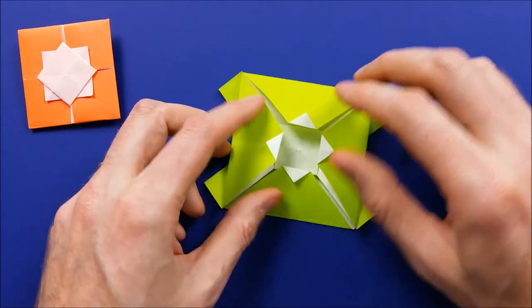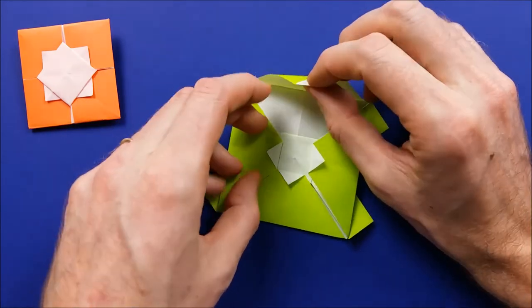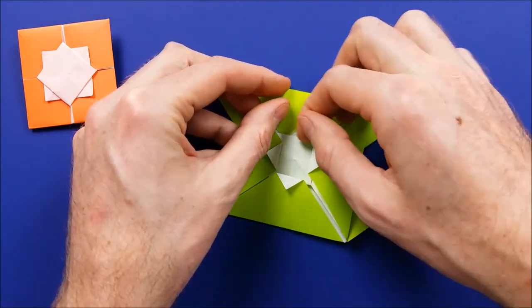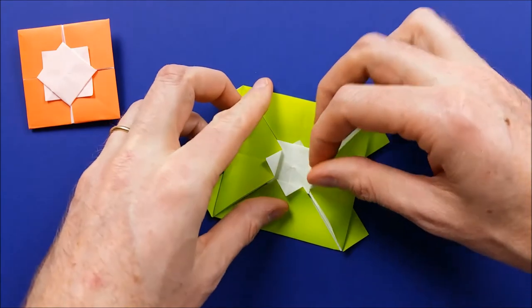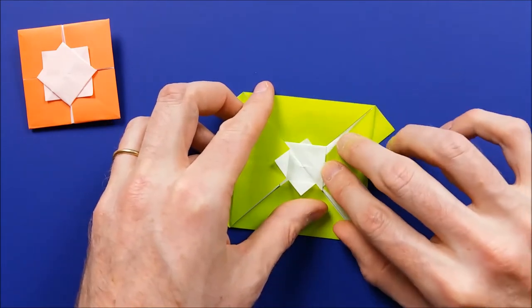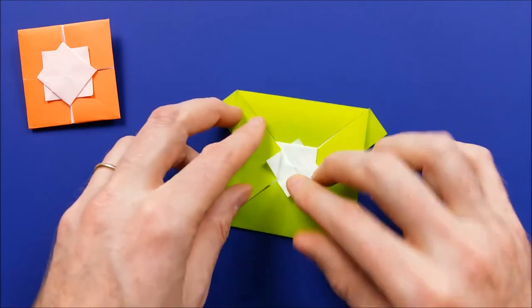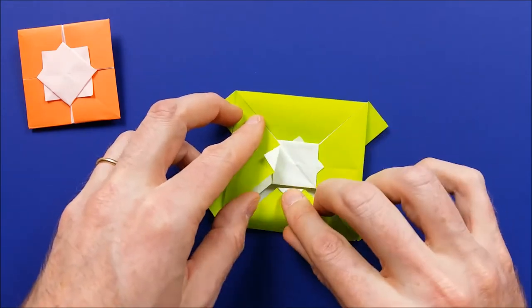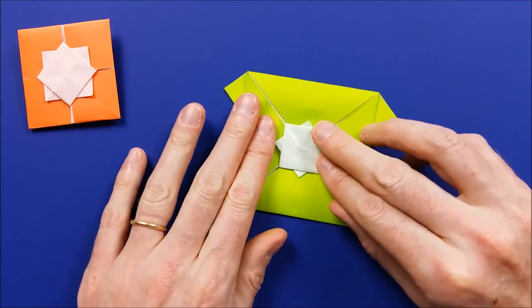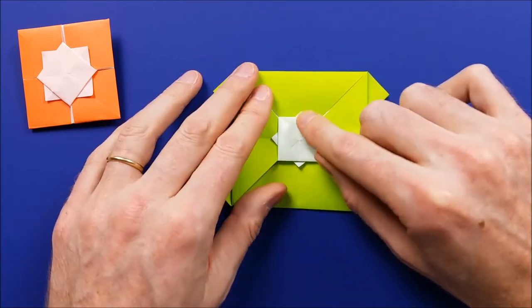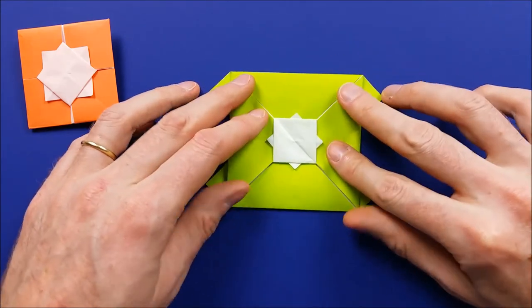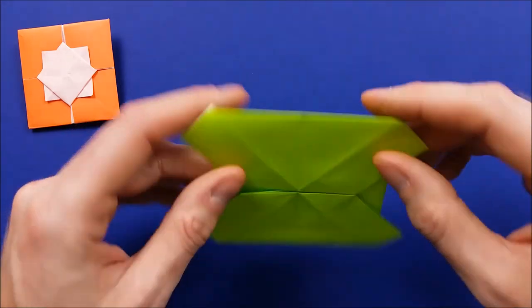Now what we're going to do is to slide those corners under the square in the middle. Like this. So don't worry if those tips don't have exactly the same size. We will adjust them later. So turn the model to the other side.